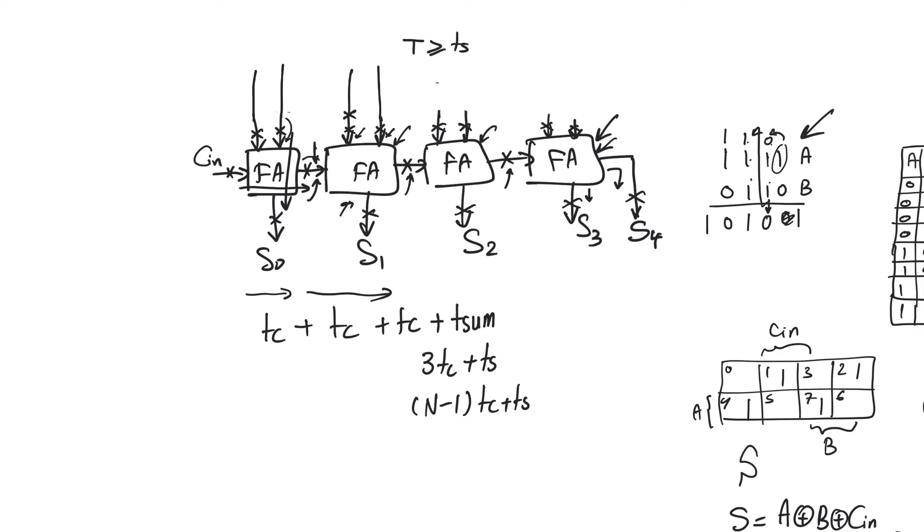What we need to do is we need to delay the A and the B by another cycle so that they arrive at the same time as the carry-in. For the third adder, you will notice that now there are three registers along the way to the carry-in, either through A1 and B1 and carry-in or all the way up from A0 and B0. You will always see three registers along the way. And so we need to add two registers here. And finally here, along the way, this will only be ready after four cycles, while these will be ready after one cycle. And so we need to add three registers here.